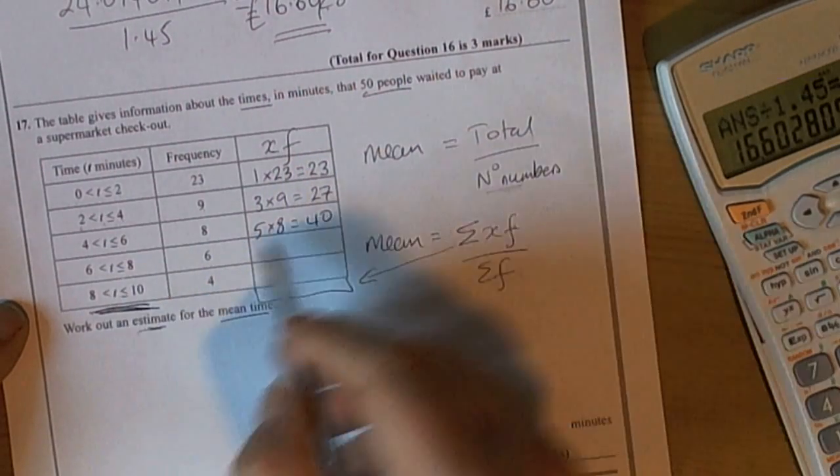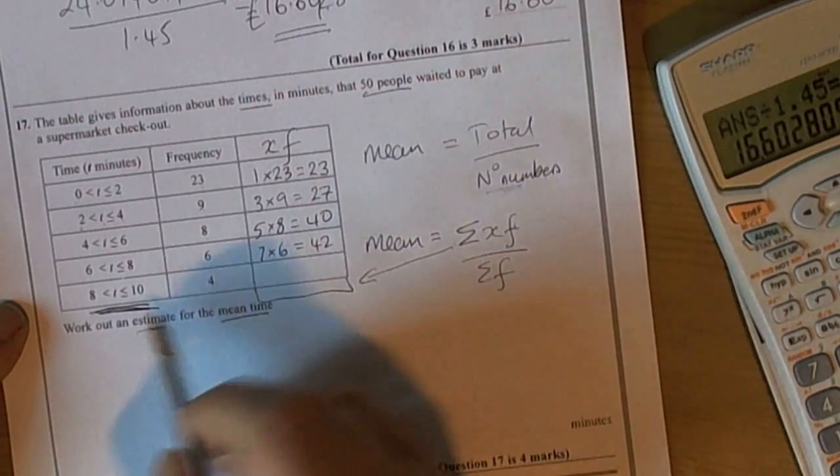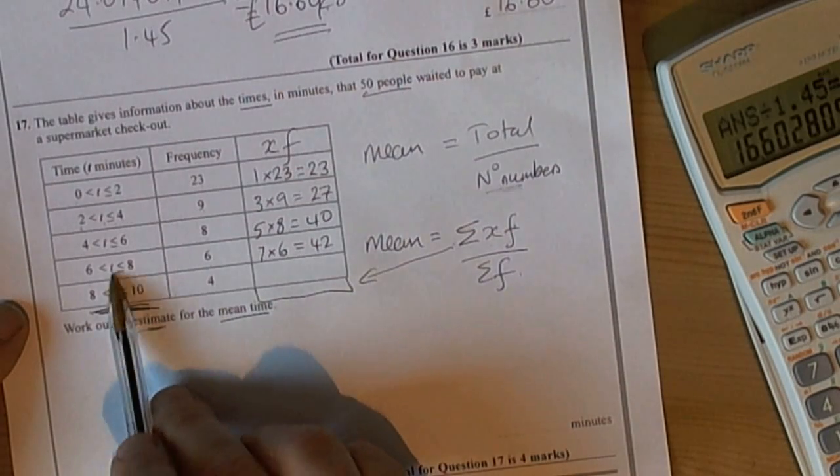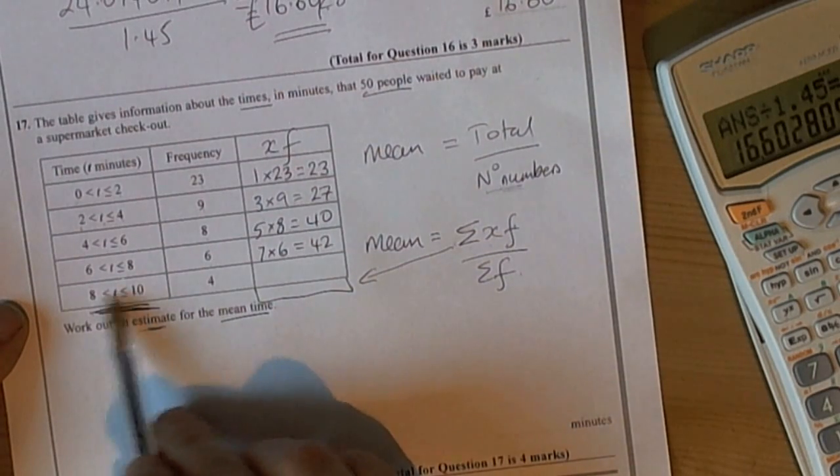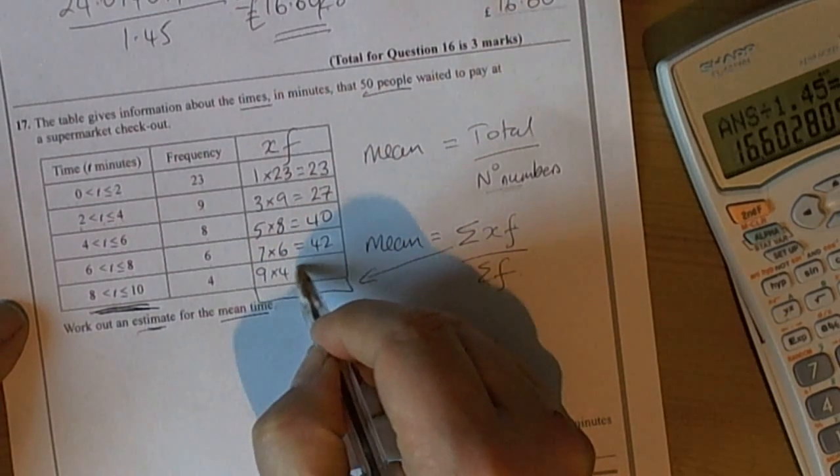These 6 people took 7 minutes, so 7 times 6 is 42 minutes. And these 4 people took between 8 and 10, so we're going to estimate they each took the average time of 9 minutes (the midpoint). So 9 times 4 is 36.